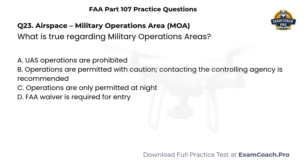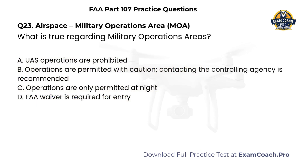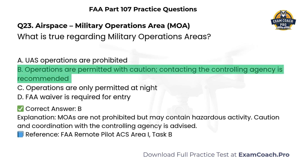Airspace. Military operations area. What is true regarding military operations areas? A. UAS operations are prohibited. B. Operations are permitted with caution; contacting the controlling agency is recommended. C. Operations are only permitted at night. D. FAA waiver is required for entry. Correct answer: B. MOAs are not prohibited, but may contain hazardous activity. Caution and coordination with the controlling agency is advised.